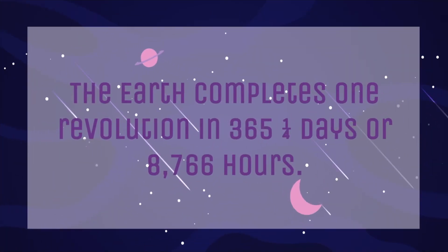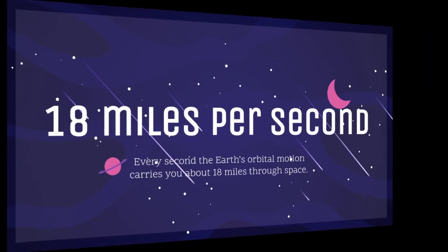The Earth completes one revolution in 365 and one-fourth days, or 8,766 hours. Every second, the Earth's orbital motion carries you about 18 miles through space.